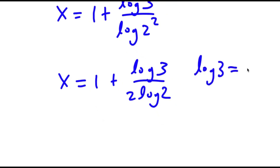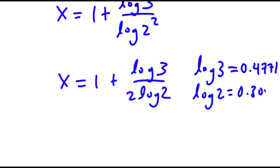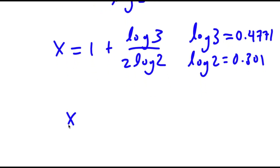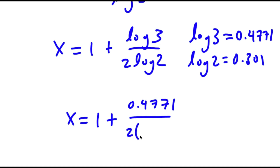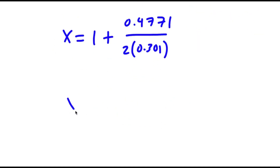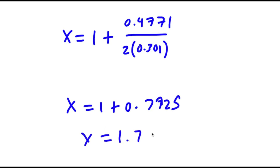Now log 3 is equal to 0.4771, and log 2 is equal to 0.301. So now I have x is equal to 1 plus 0.4771 over 2 times 0.301. This is equal to 1 plus 0.7925, which is equal to 1.7925.